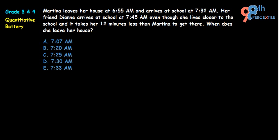The question reads: Martina leaves her house at 6:55 AM and arrives at school at 7:32 AM. Her friend Deanne arrives at school at 7:45 AM, even though she lives closer to the school and it takes her 12 minutes less than Martina to get there. When does she leave her house?